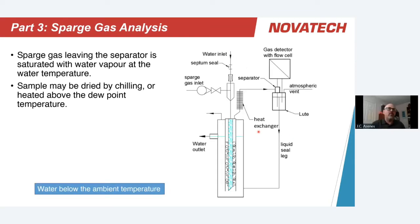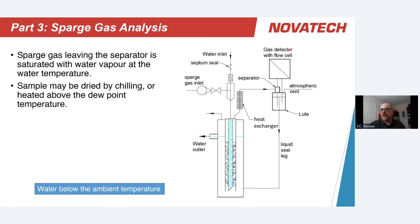In the case where the incoming water temperature is below ambient conditions, the approach is much simpler. We simply need to bring the gas temperature up as quickly as possible away from the dew point temperature, which can be done easily with a finned heat exchanger to bring the gas temperature up to room temperature, and then carry on to whatever detection method is used.